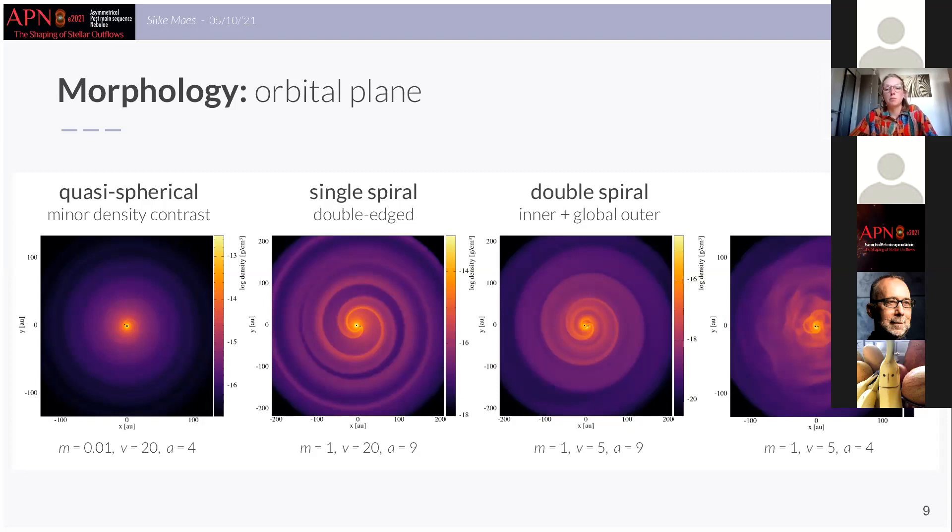Now if we lower this wind velocity this also creates a spiral pattern but you can see that it has different characteristics. For example in the inner wind you can see that there is a double spiral emerging and the two spirals quickly merge to one global spiral. Now lastly we find that if we also decrease the binary separation we find that the spiral becomes perturbed and in the next talk of Jolien Malphe you will hear all about the cause of these perturbations in the outflow. However this already indicates that already simple systems can create complex morphologies.